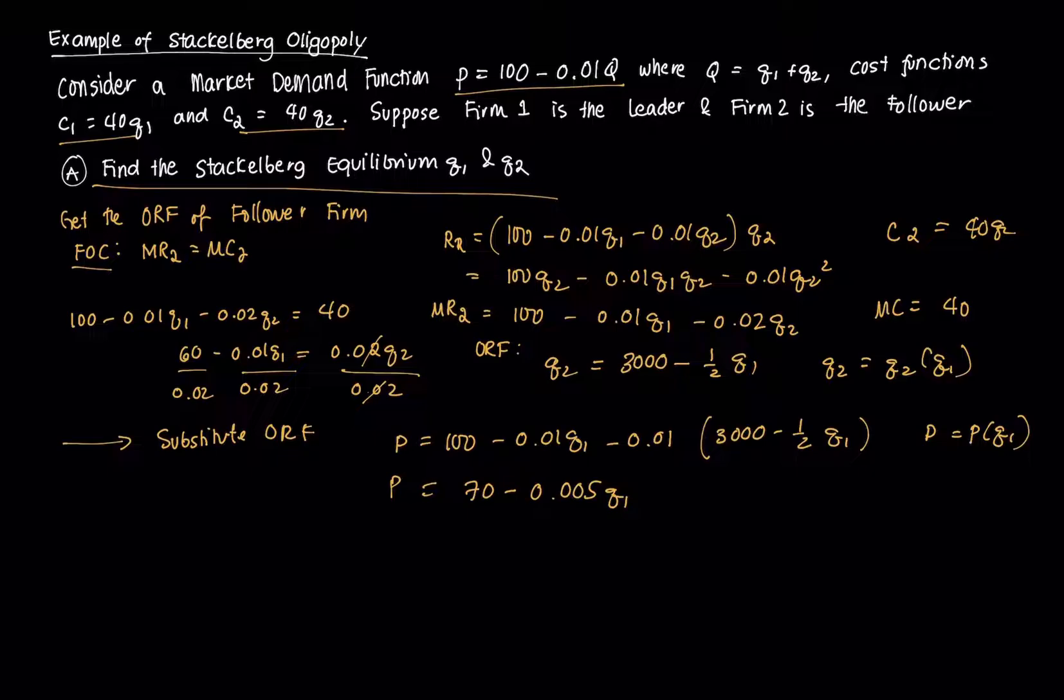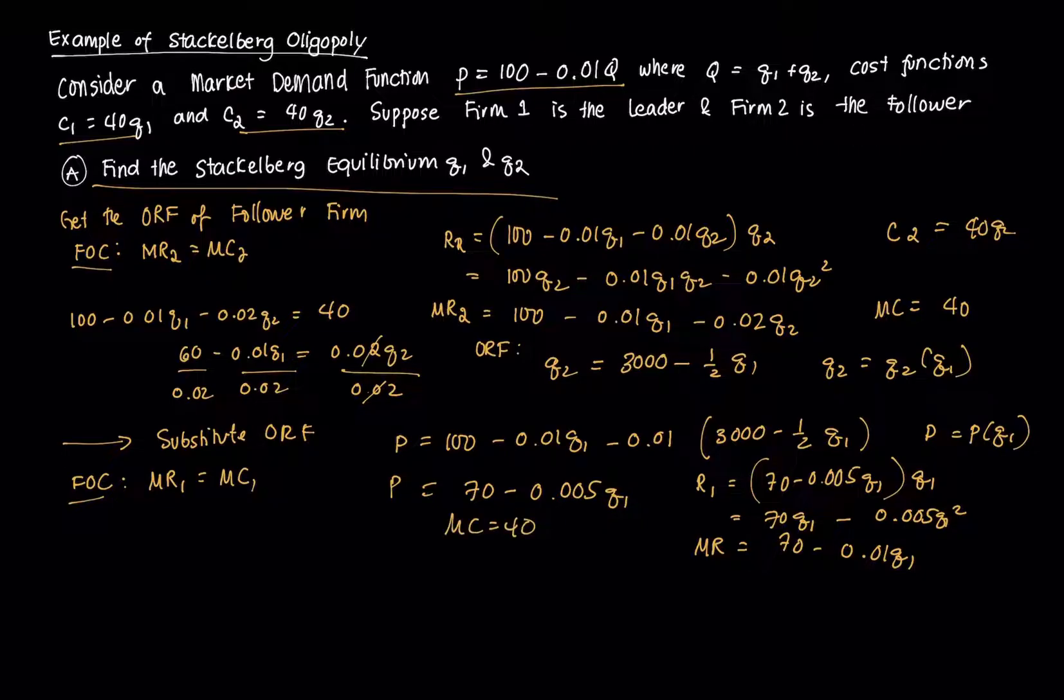Then we know that the FOC that we need to follow is that MR1 should equal MC1. So to get R1, this is just (70 - 0.005Q1) times Q1, which would be equal to 70Q1 - 0.005Q1 squared. Then to get marginal revenue, I just take the first order derivative of that with respect to Q1. That's 70 - 0.01Q1. And marginal cost is equal to 40. Then I equate the two. So 70 - 0.01Q1 equal to 40. I get Q1 star being equal to 3000.